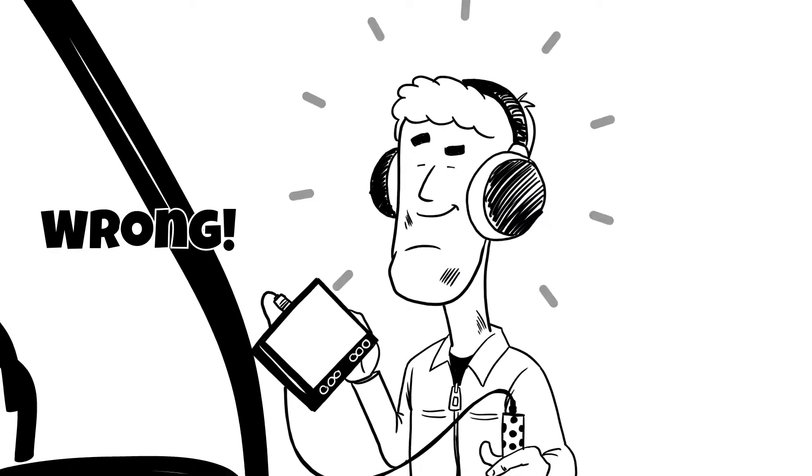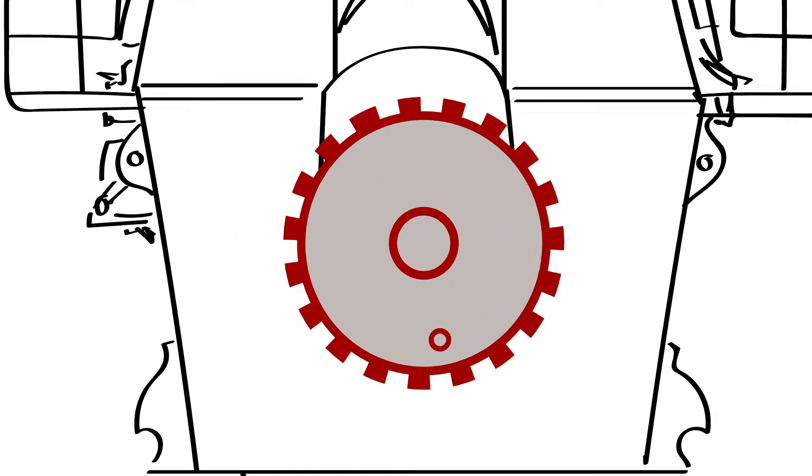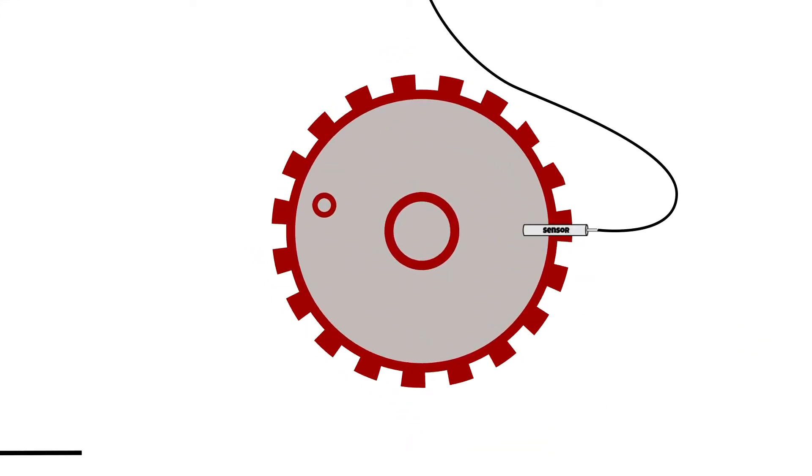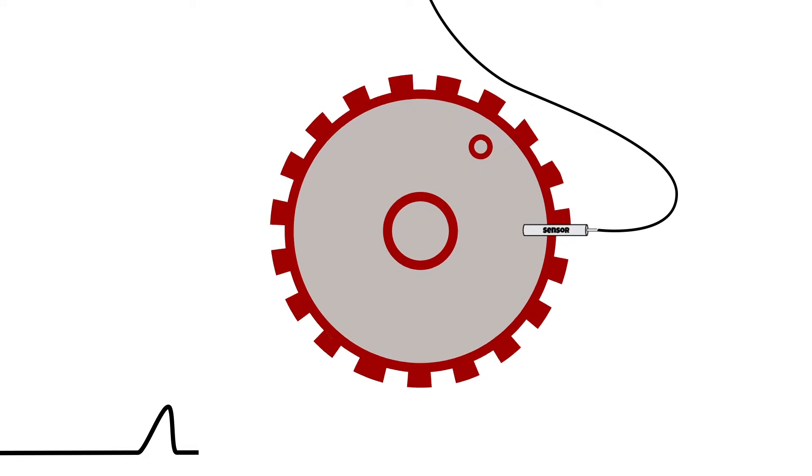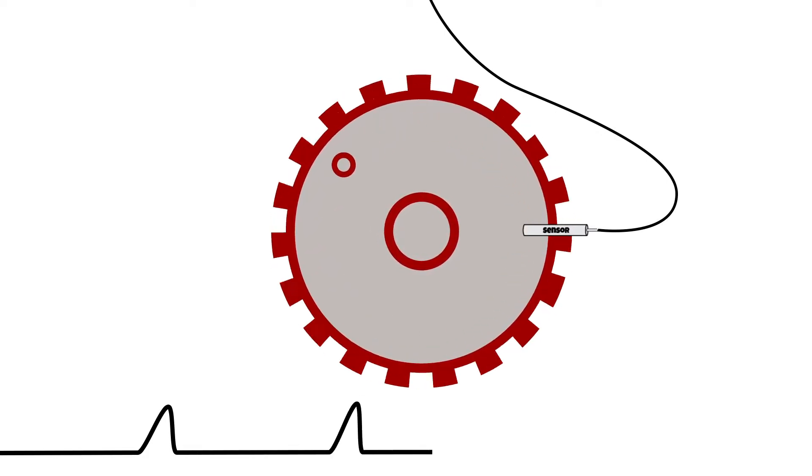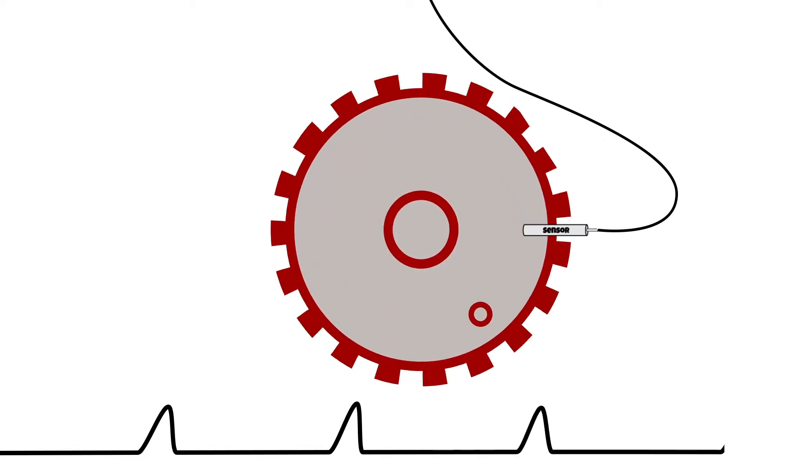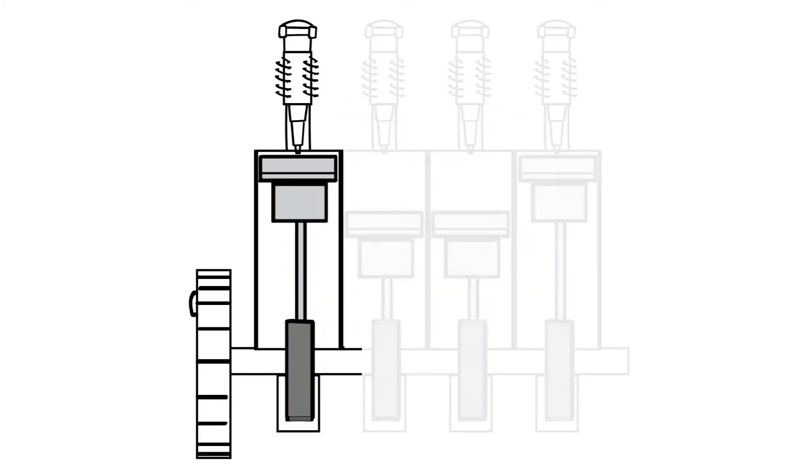But with the use of a TDC sensor, the problem would be obvious. The TDC sensor will pick up the magnetic mark on the flywheel and give one signal per revolution, always at the exact same time related to the crankshaft position. In the software, this signal is corrected and matched to the top dead center of the first cylinder.